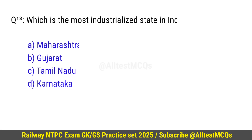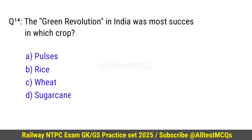Question number 13: Which is the most industrialized state in India? Right option is A — Maharashtra. Question number 14: The Green Revolution in India was most successful in which crop? Correct option is C — Wheat.